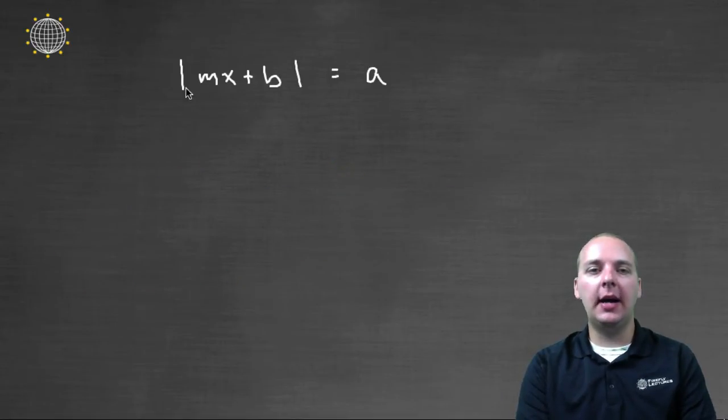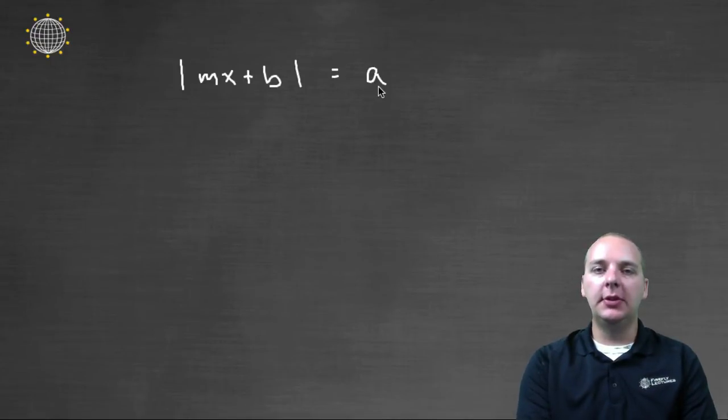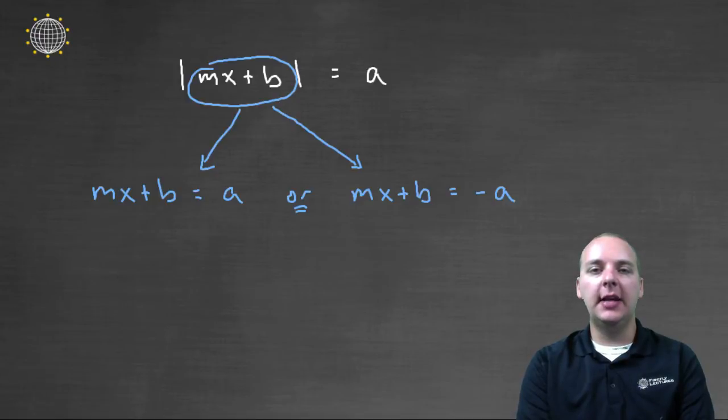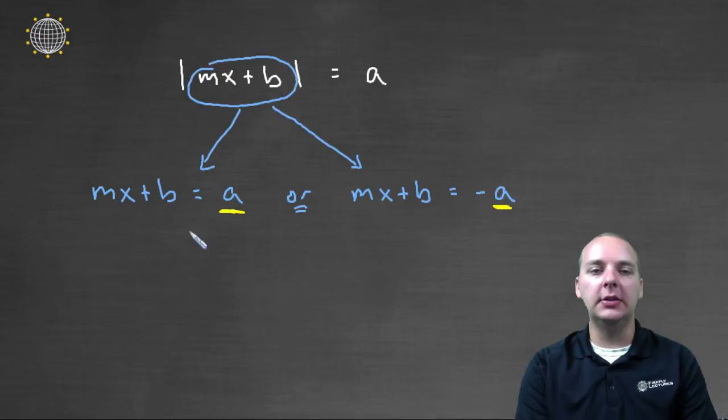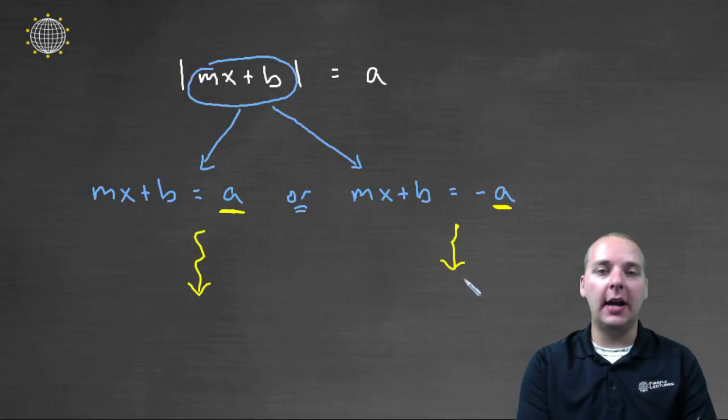For example, if you had the absolute value of mx plus b, let's just say it's linear, and that's equal to some positive number a, then basically I see what needs to happen. Either that stuff on the inside has to be a or negative a. As I said earlier, the only catch is that you might not be done solving for x quite yet. Once you set up these two different equations, then you continue on your way to figure out what x actually has to be.